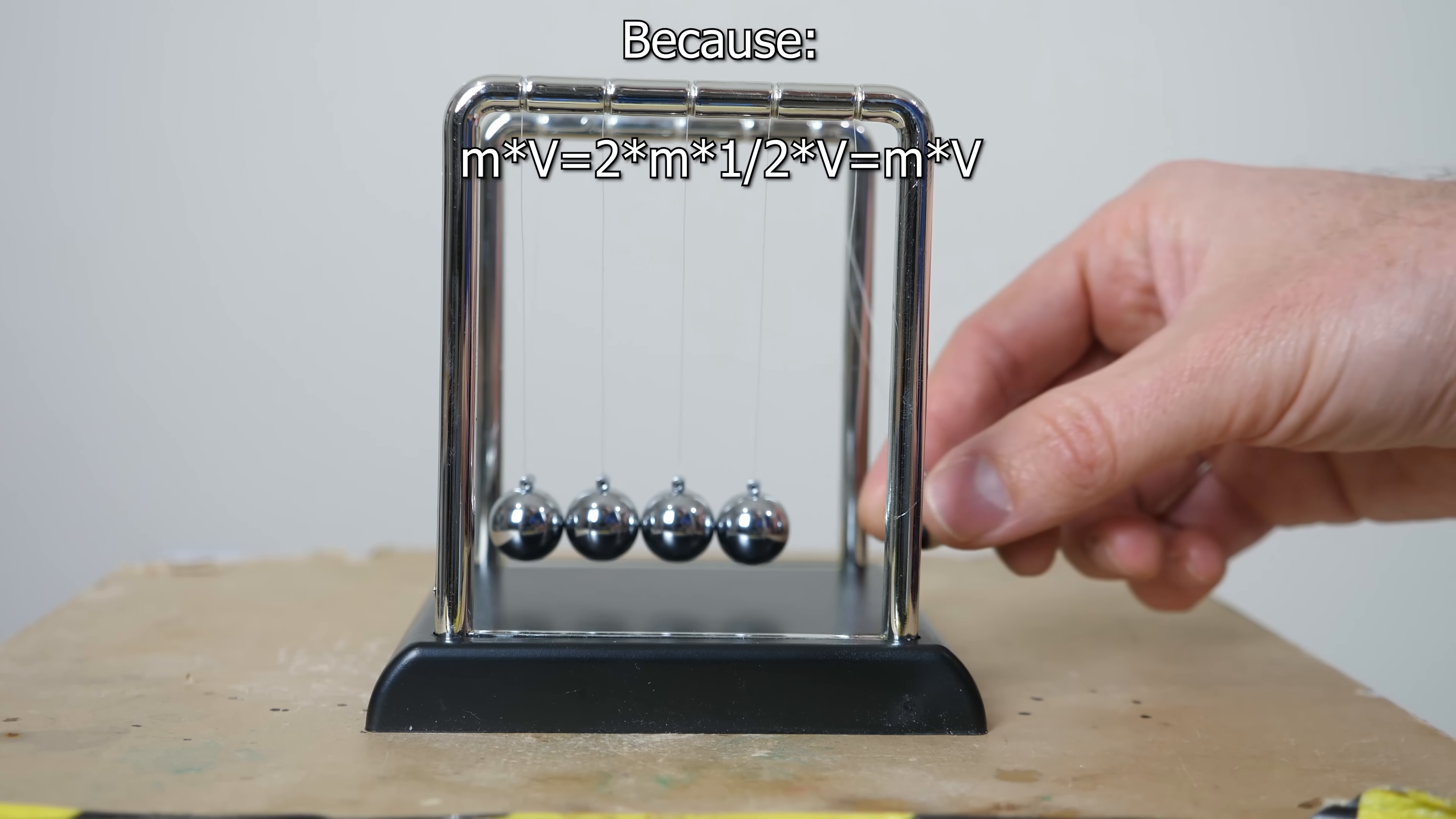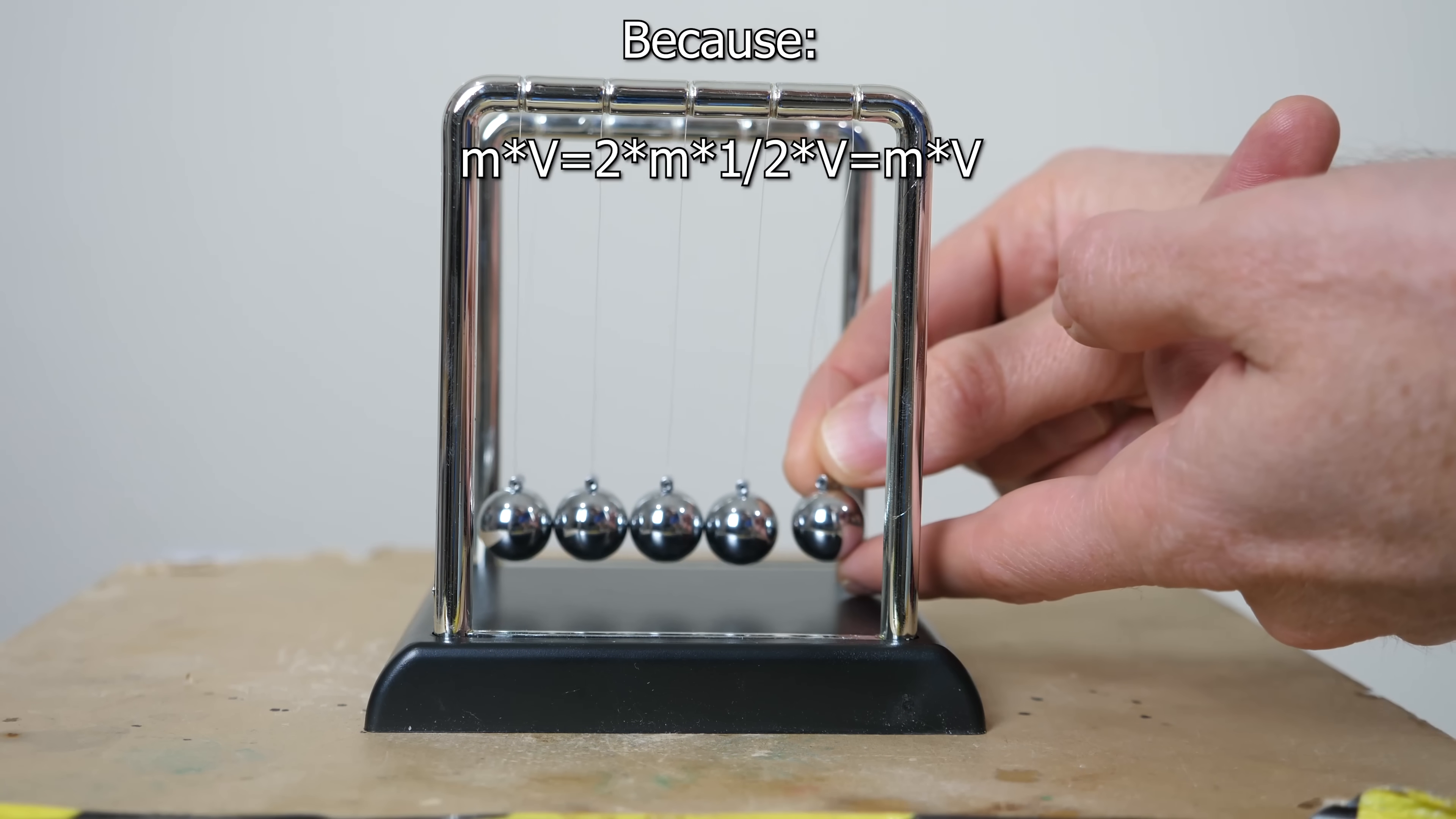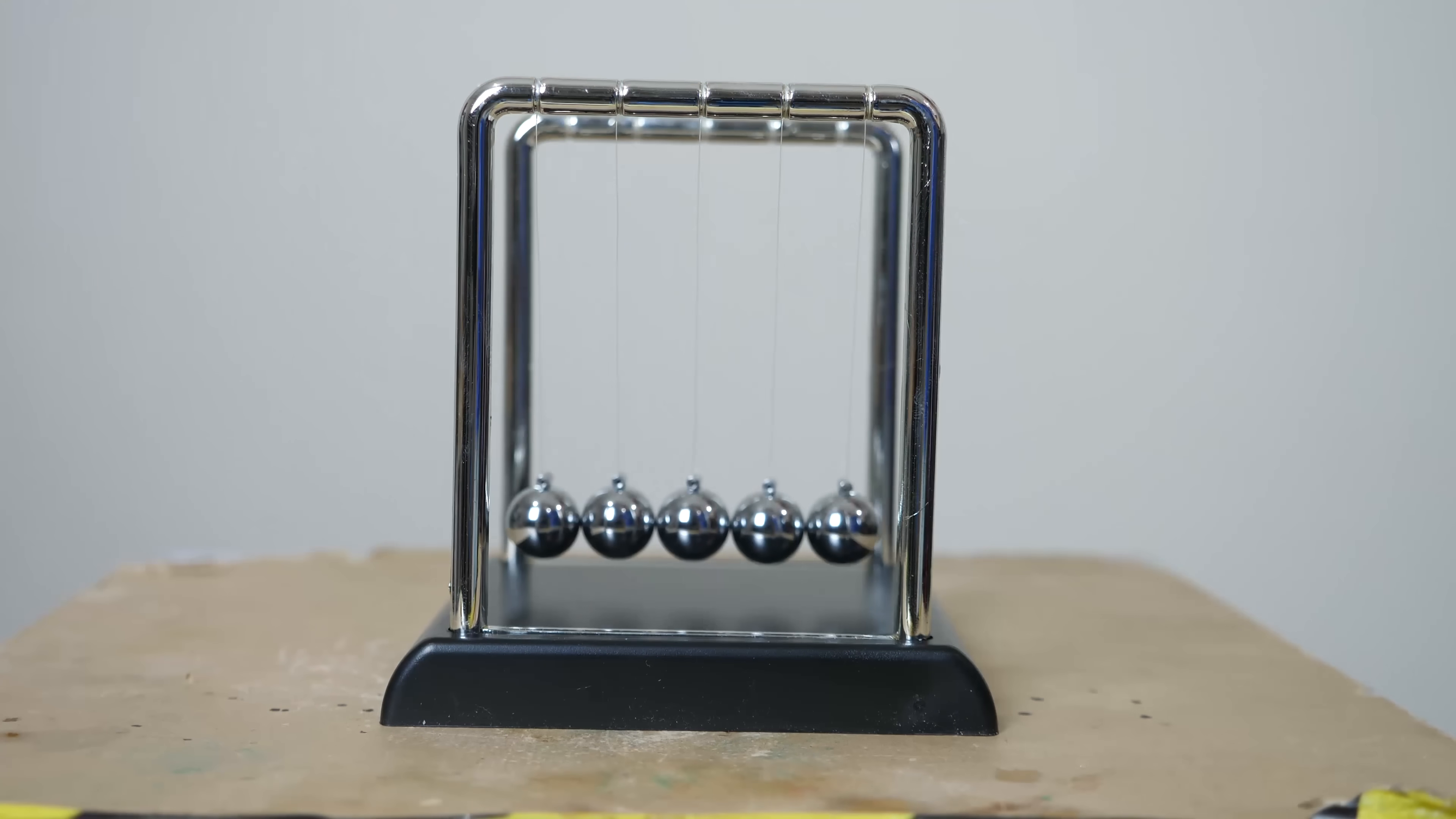So if you're just teaching it through conservation of momentum, then there's nothing to say that when you release one ball and it hits, then two balls don't fly off the end with half the speed, or three balls come off the end with a third of the speed. But here's how a Newton's Cradle really works.